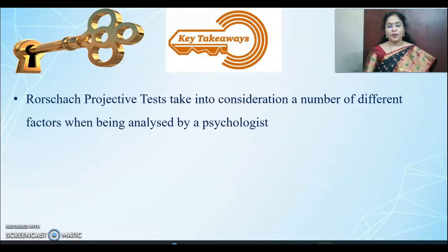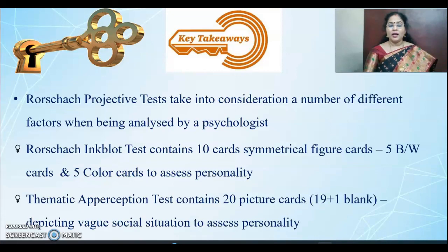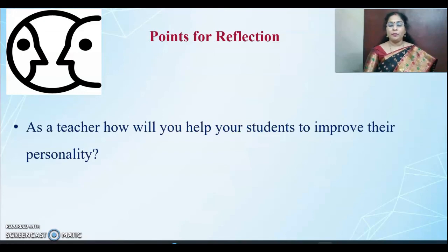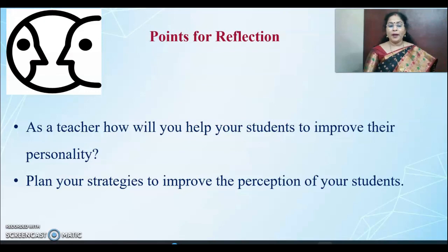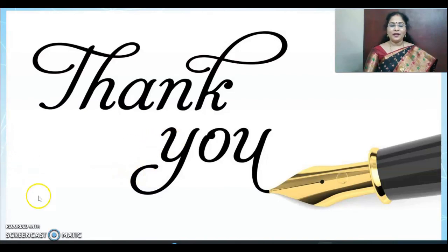The key takeaway messages are: the Rorschach inkblot test takes into consideration a number of different factors analyzed by the psychologist, containing 10 cards — 5 black and white and 5 colored — to assess personality. The Thematic Apperception Test contains 20 picture cards — 19 picture cards and 1 blank card depicting vague social situations — to assess personality. As a teacher, how will you help your students improve their personality? For further information, kindly refer to the resources. Thank you for listening. Wish you all good luck.